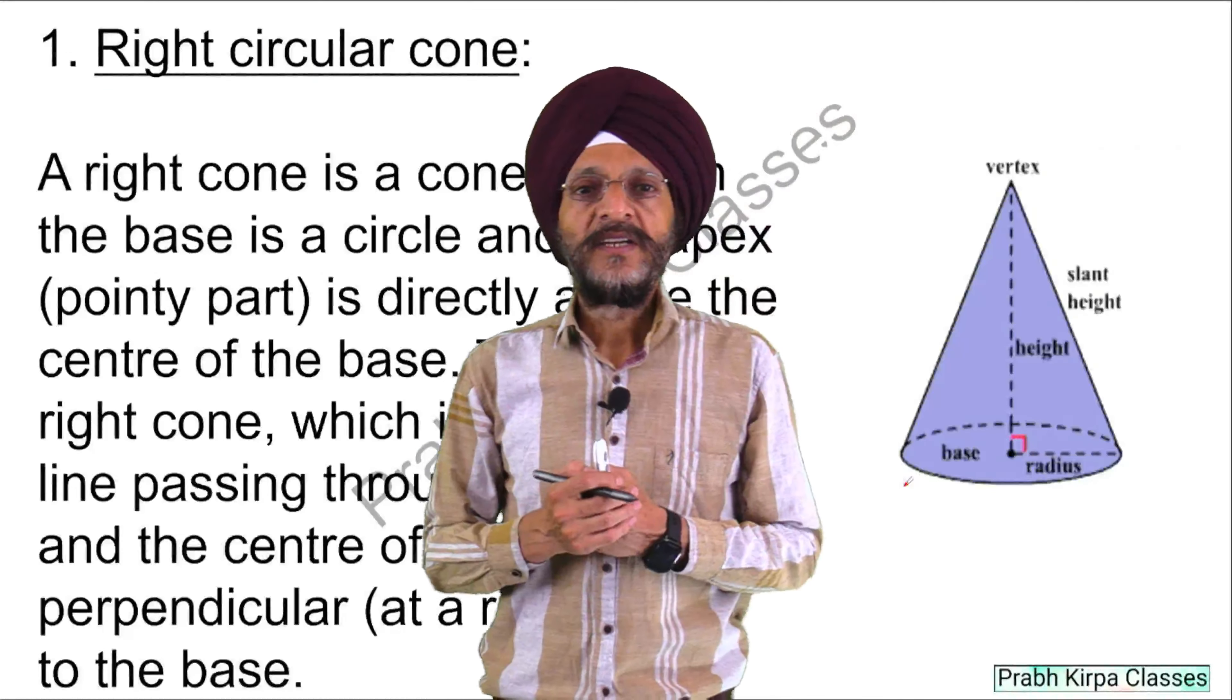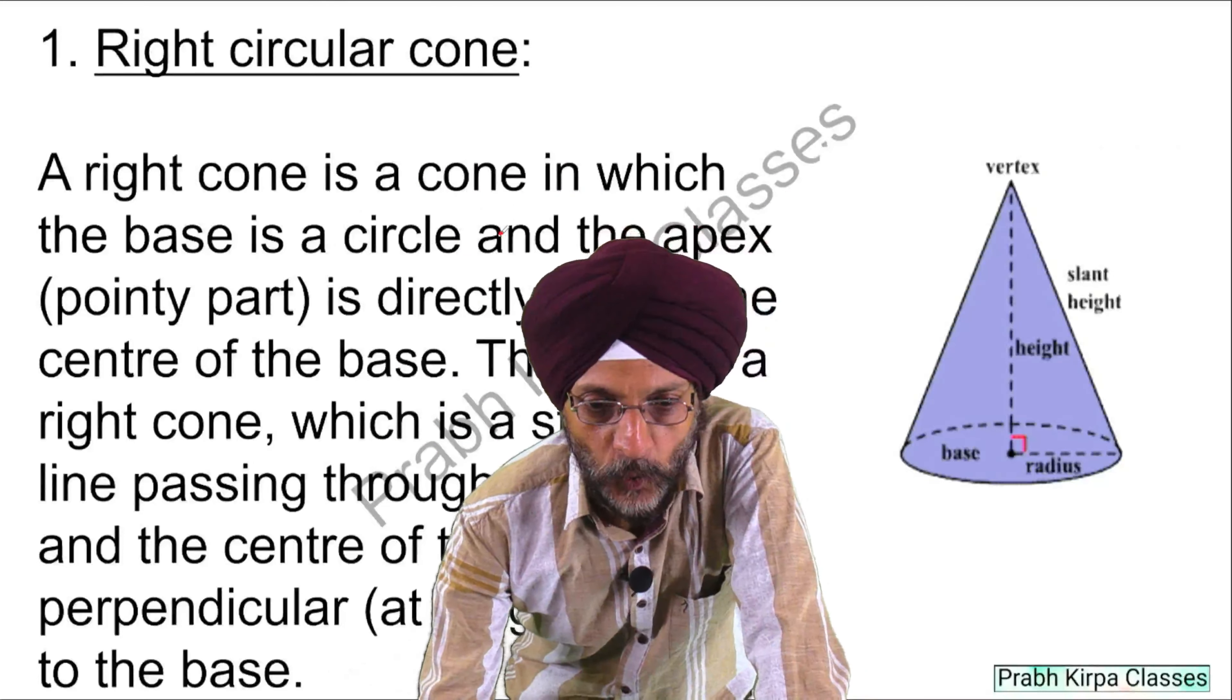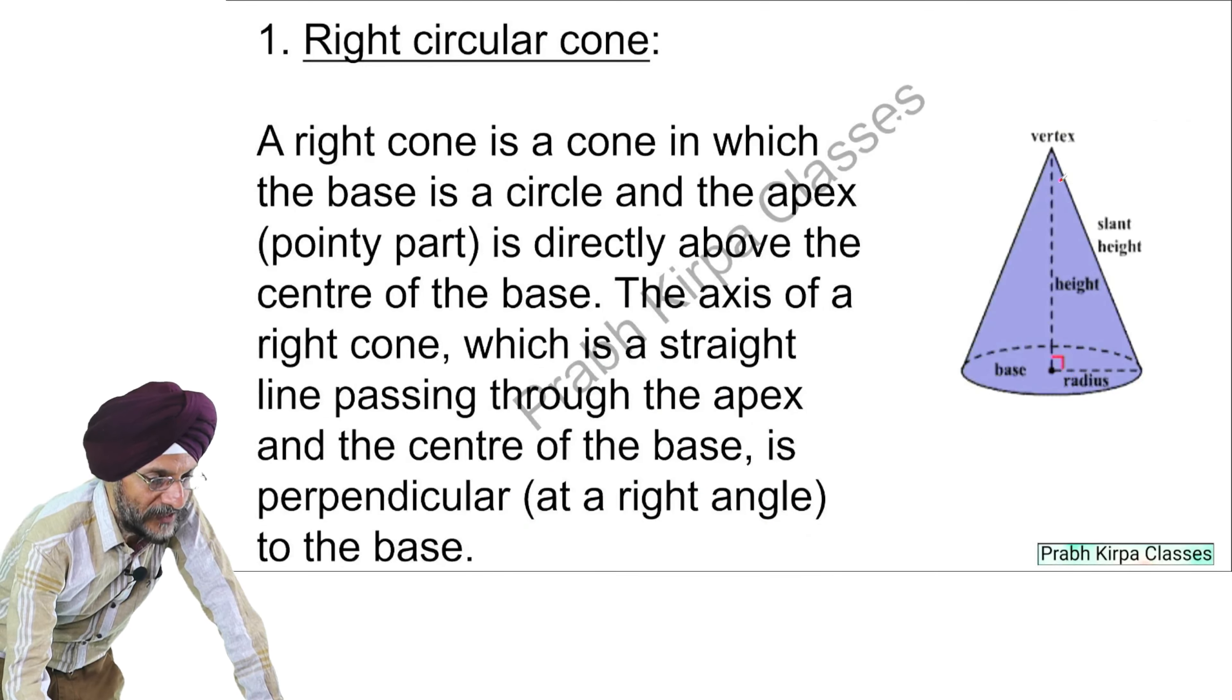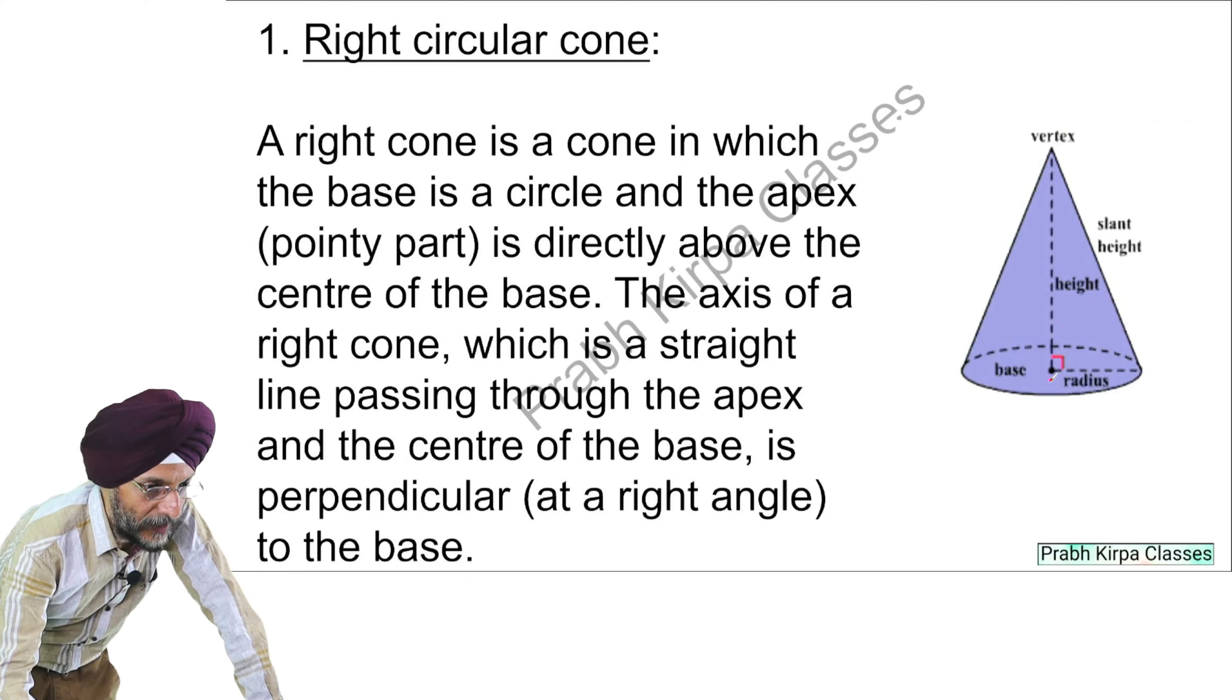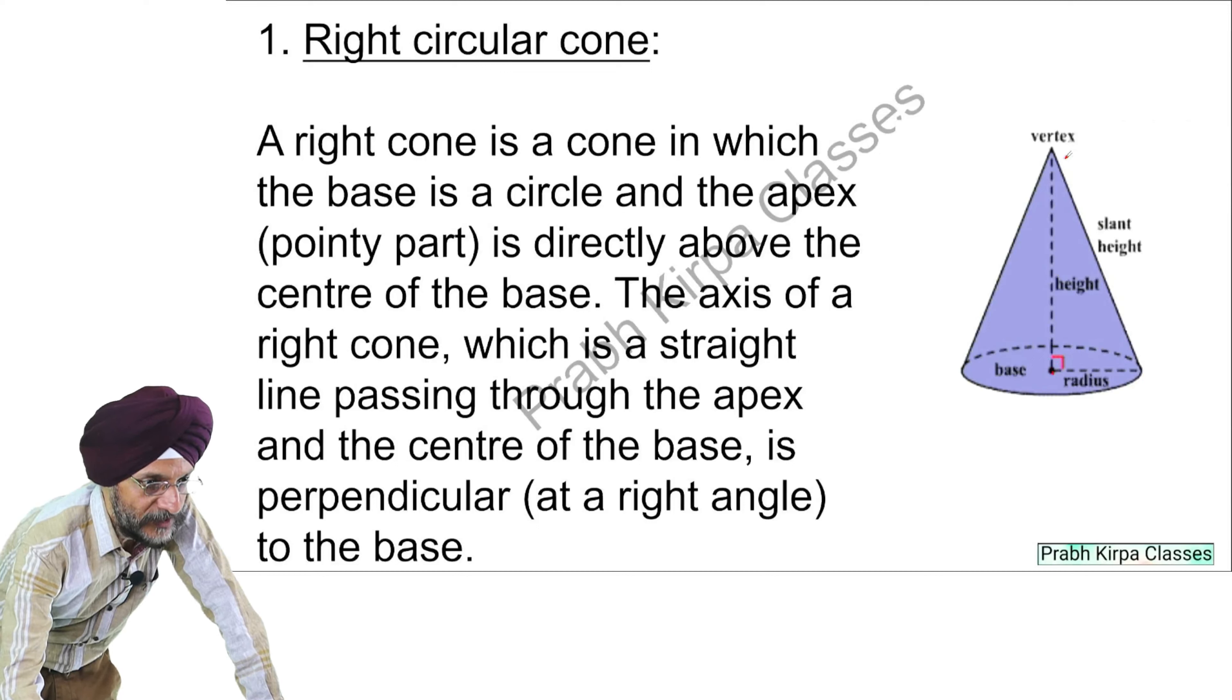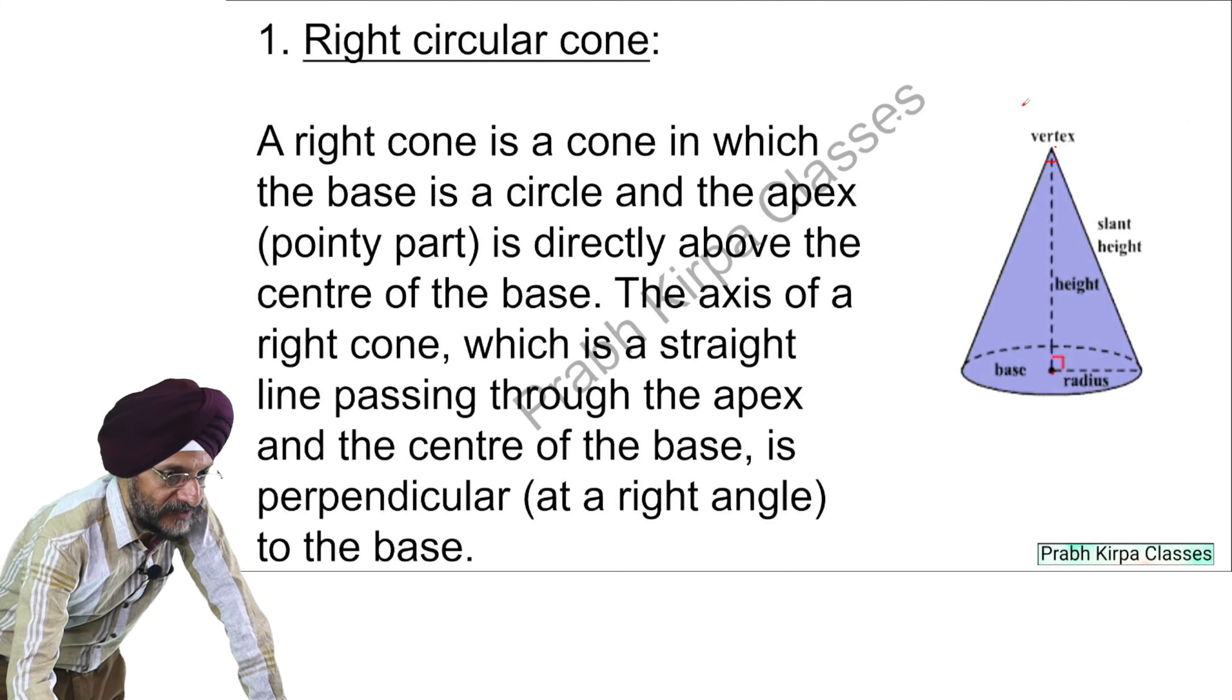First is right circular cone. A right cone is a cone in which the base is circular and the apex, that is the pointy part, is directly above the center of the base. You can see here that this pointy part is directly above the center of the base.